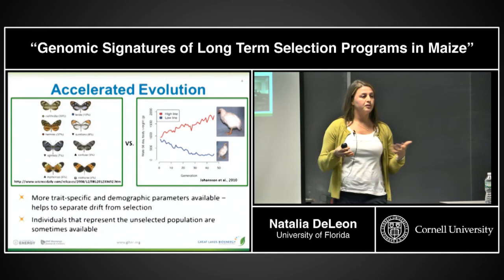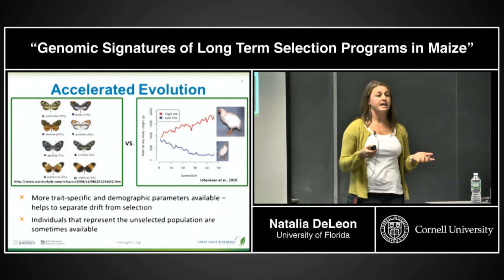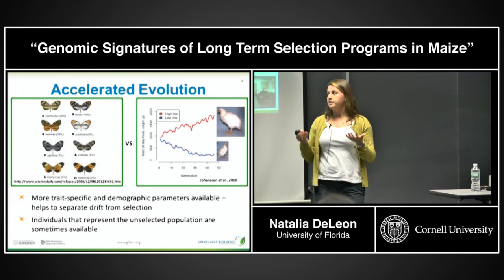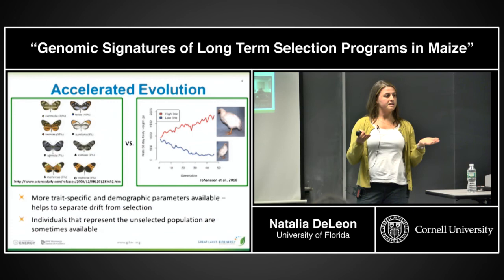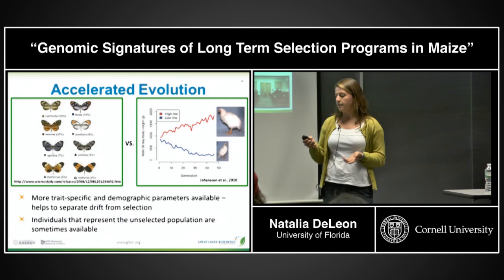Another interesting characteristic of what we call accelerated evolution experiments is that primarily in the case of plants, we sometimes have the ability to go back to cycle zero. So we have genomic information about that original population, genomic and phenotypic information about the selected population, and if records have been kept, we also have information about the demographic changes of that population — allowing us to make inferences about what forces have shaped the genome.